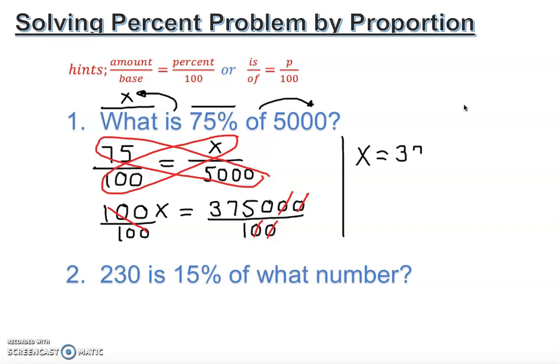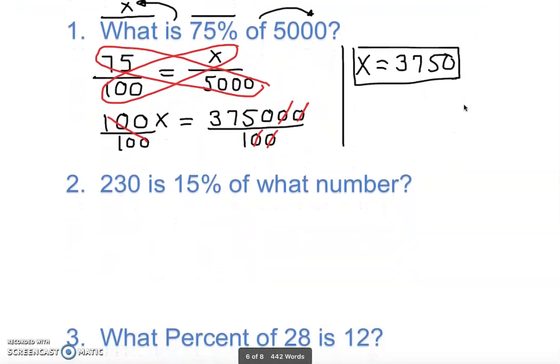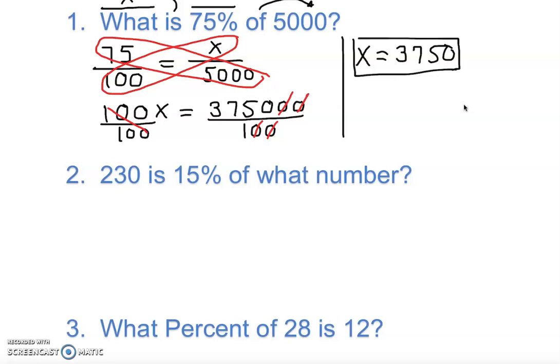The answer is 3,750. The question asks for a missing number and the percentage is already given, so we do not put a percentage symbol on the answer. Some students mistakenly add a percentage sign and the answer becomes wrong. We are simply looking for a missing number.